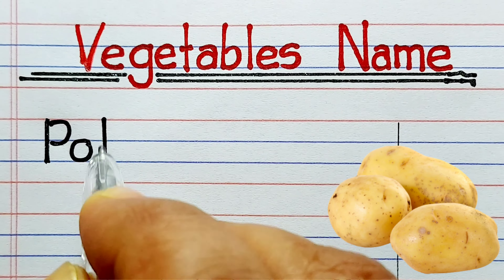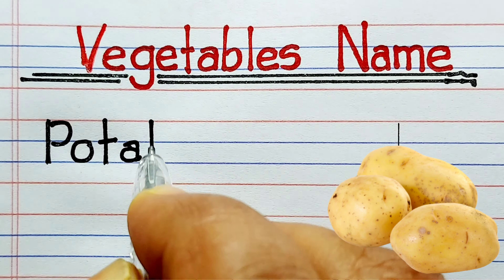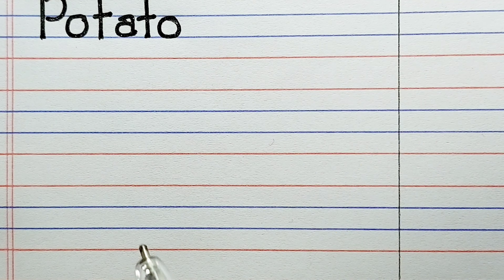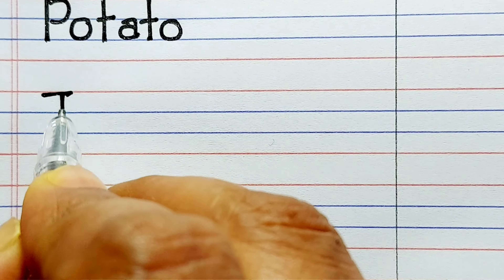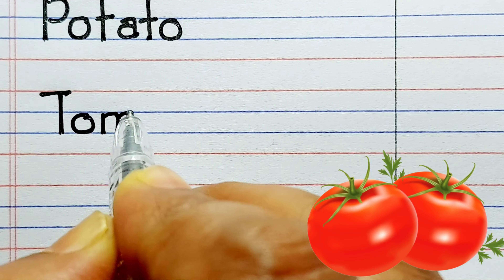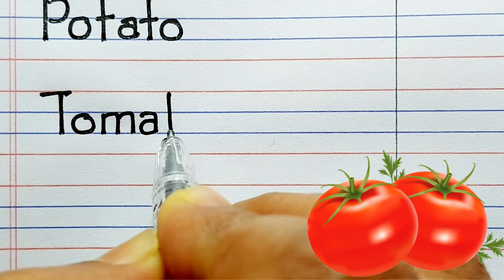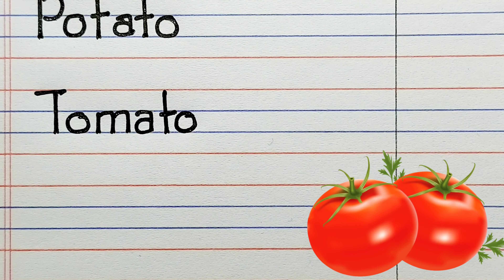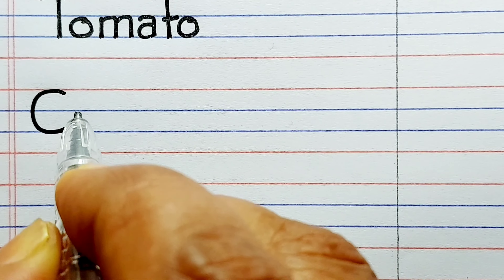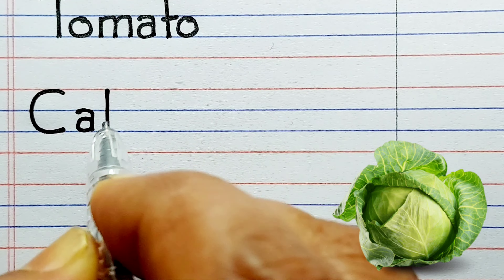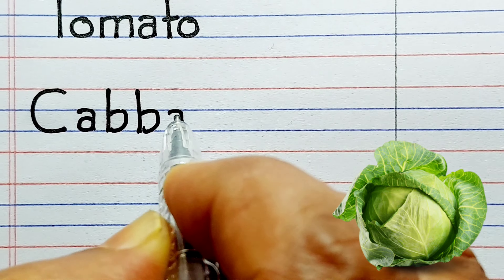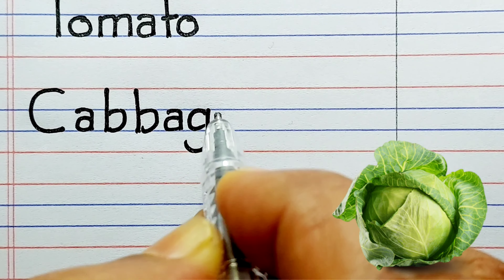So let's begin. First one: potato — p o t a t o — potato. Second one: tomato — t o m a t o — tomato. Next one: cabbage — c a b b a g e — cabbage.